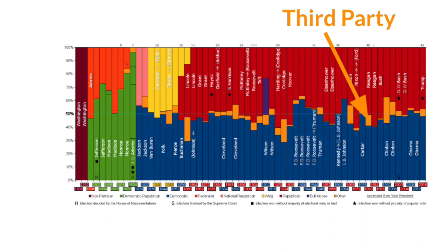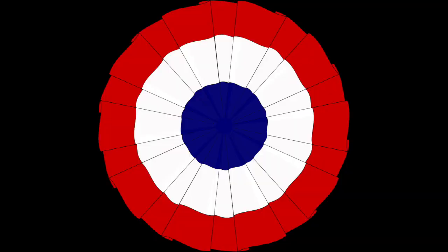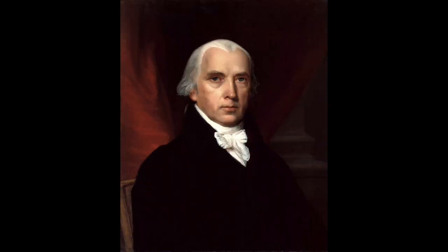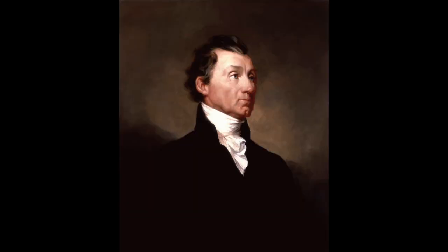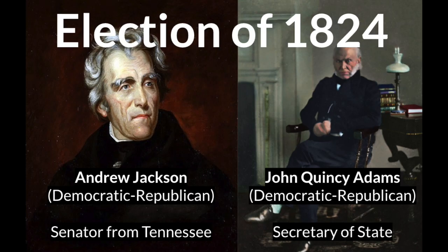First, the election of 1832. Prior to the election of Andrew Jackson, the Democratic-Republican party, founded by Thomas Jefferson, dominated American politics, spurred by widespread opposition to partisan division. In fact, the party had grown so successful that in 1824, the two main candidates for the presidency — John Quincy Adams and Andrew Jackson — were both Democratic-Republicans, members of the same party.